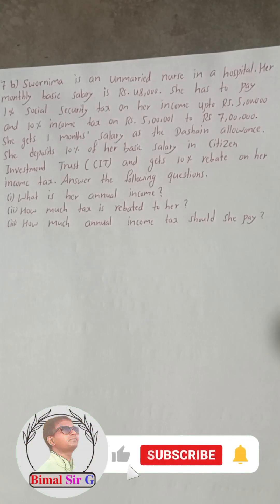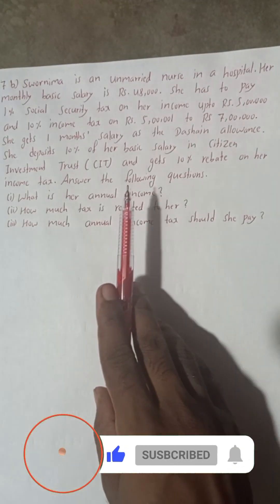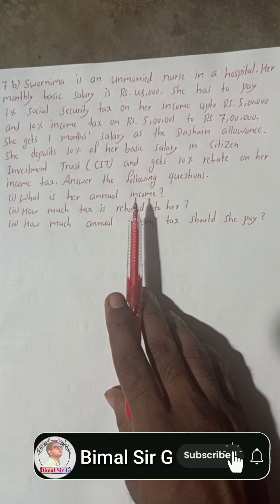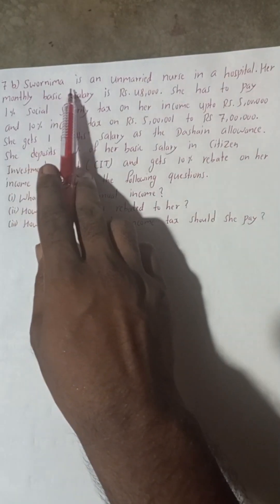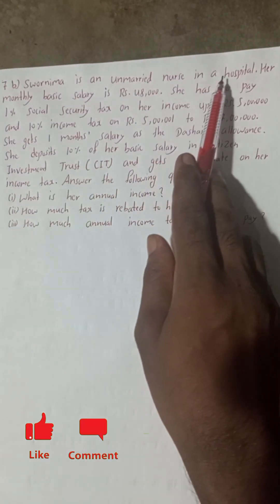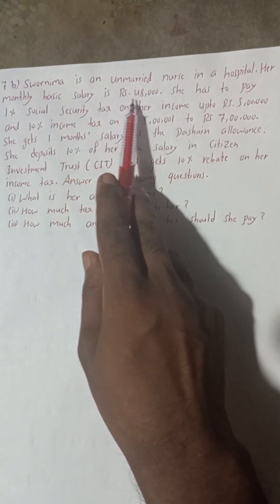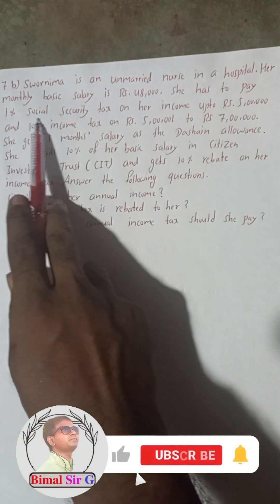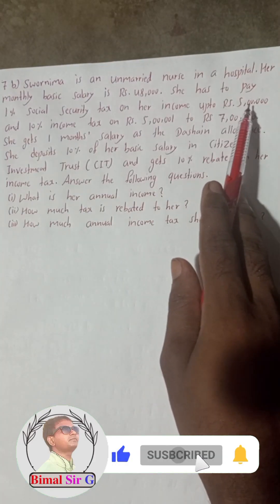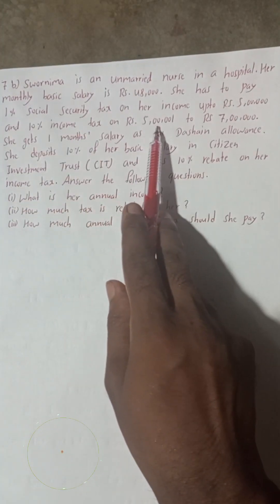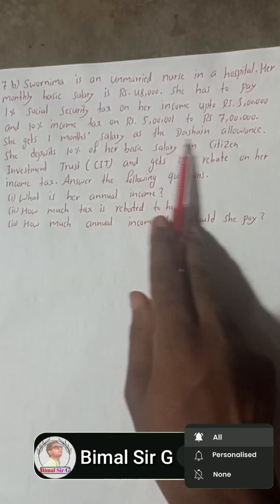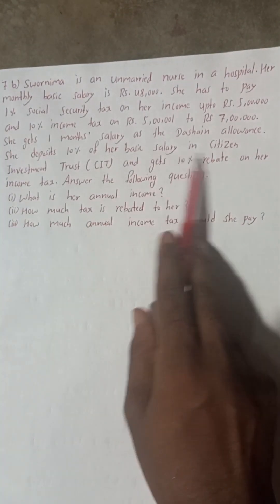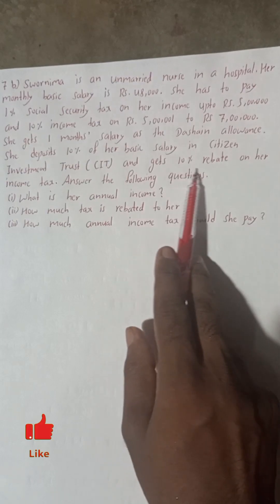Hi everybody, welcome back to Bimal Sarji's YouTube channel. This is from Class 9 compulsory maths, taxation chapter — question 7B. Nima is an unmarried nurse in a hospital. Her monthly basic salary is Rs. 48,000. She has to pay 1% social security tax on income up to Rs. 5 lakh, and 10% income tax on Rs. 5,00,001 to Rs. 7,00,000. She gets one month's salary as the Dasai allowance and deposits 10% of her basic salary in Citizen Investment Trust.